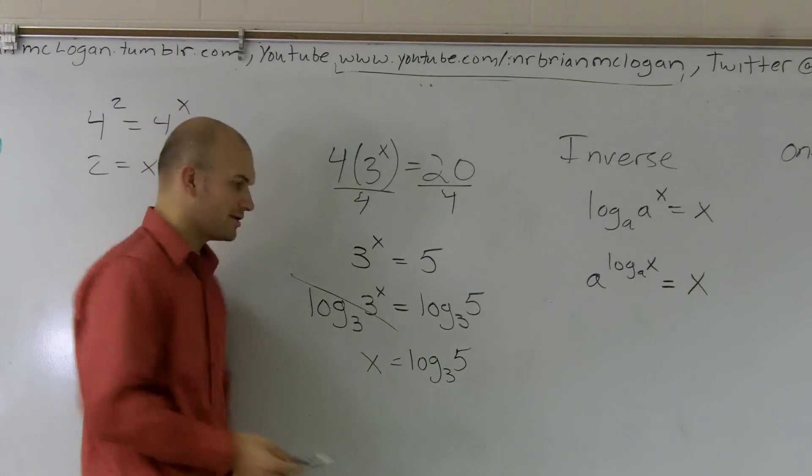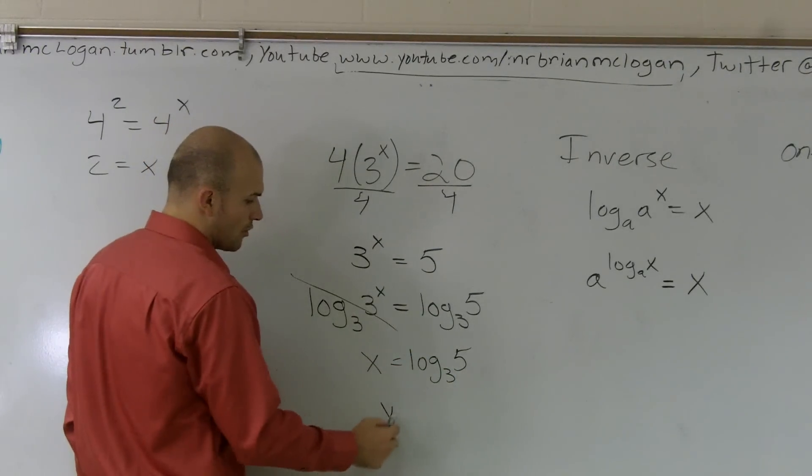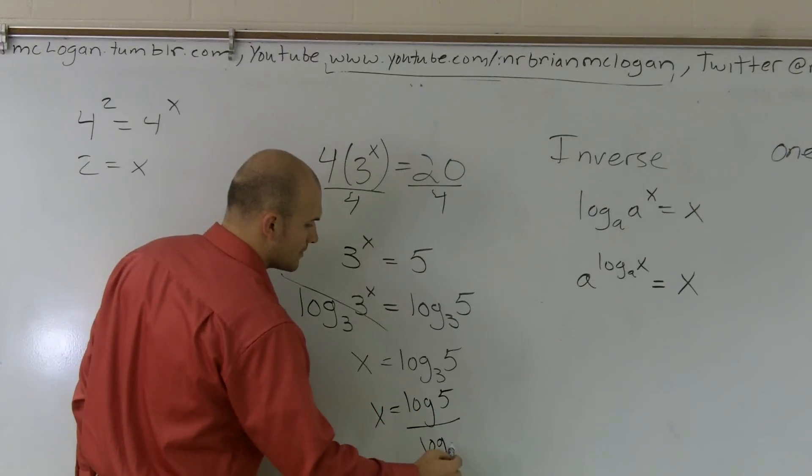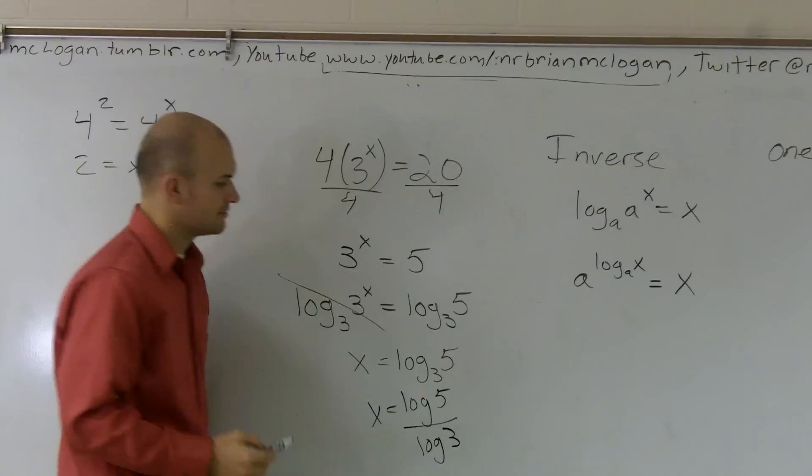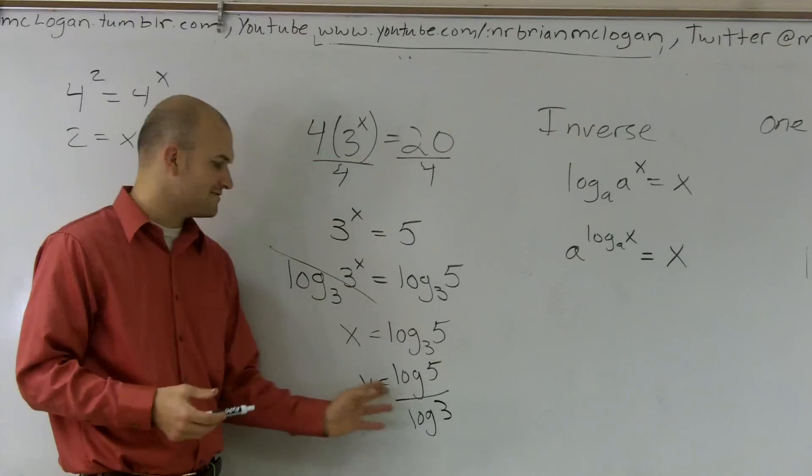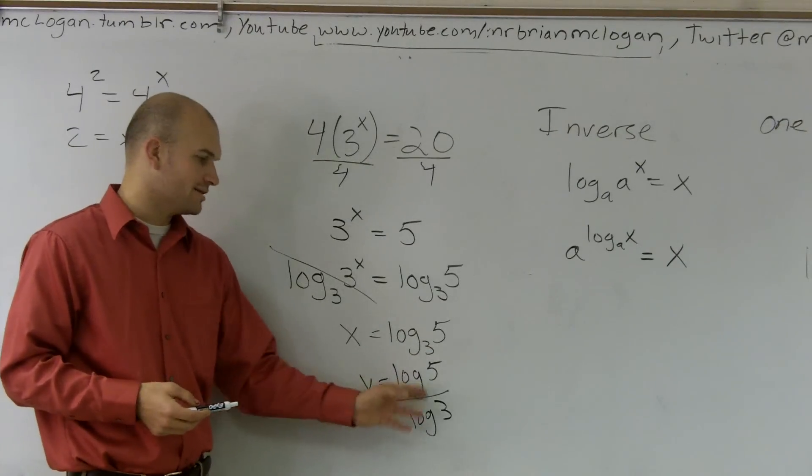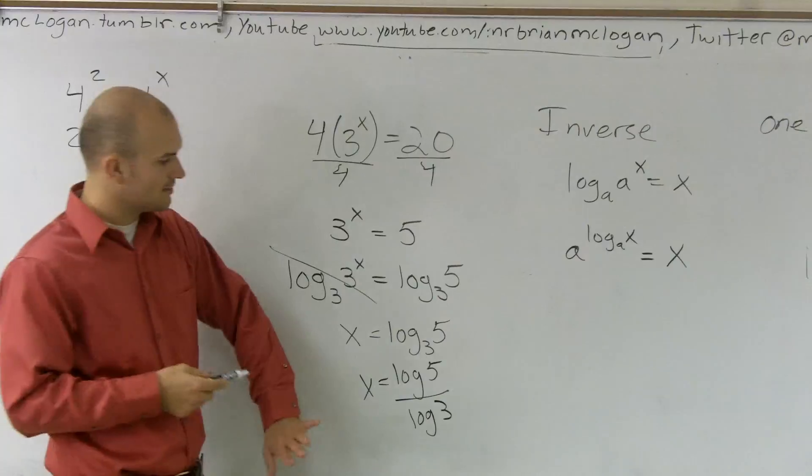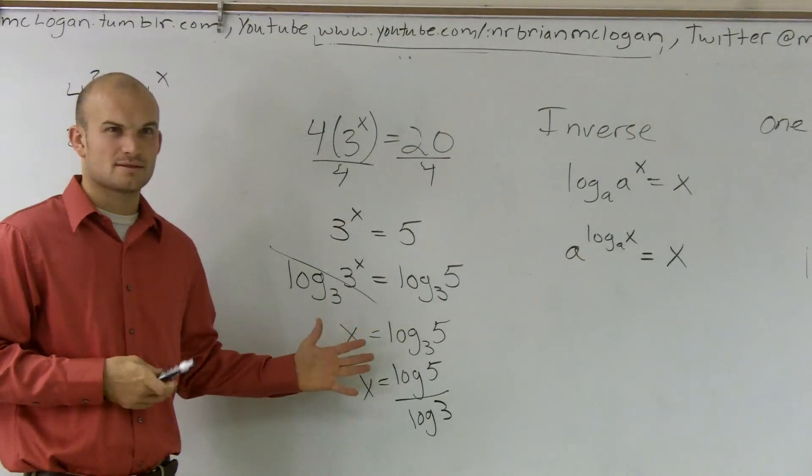Then, depending on your calculator, you can either evaluate it or you can use your change of base form, and I'll use base ten for your calculator, and instead of x equals log of five divided by x, or divided by log of three. Or you can do ln of five or ln of three, whatever. Does that make sense? Any questions?